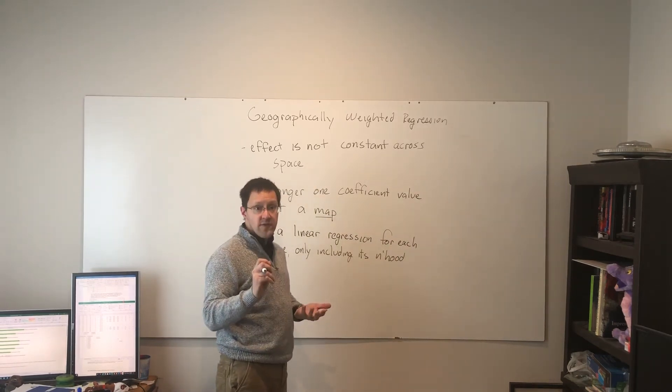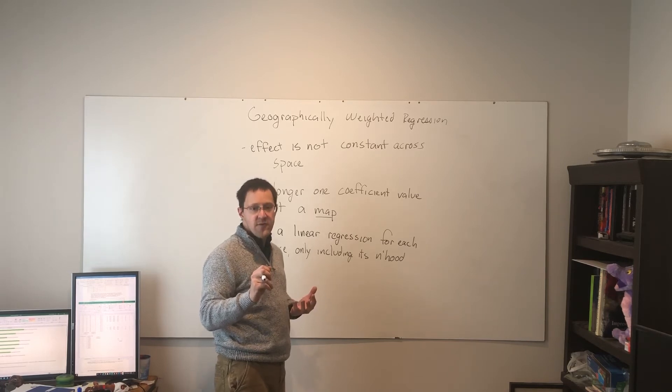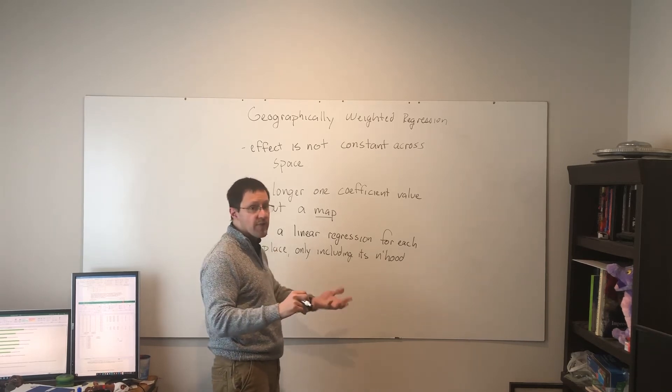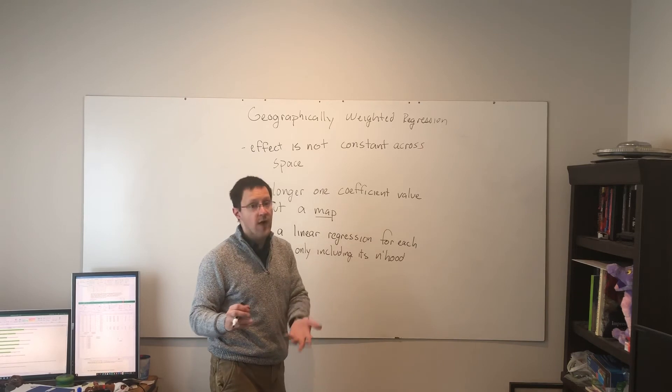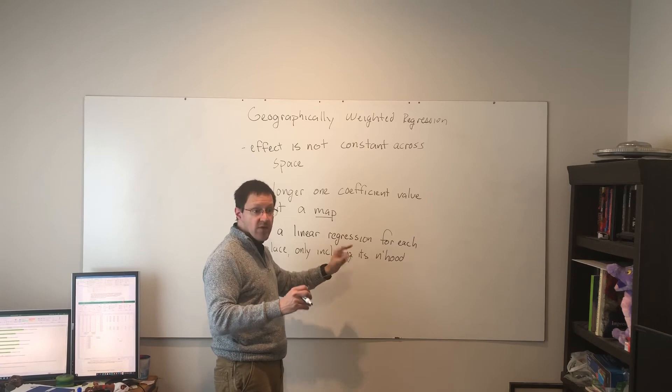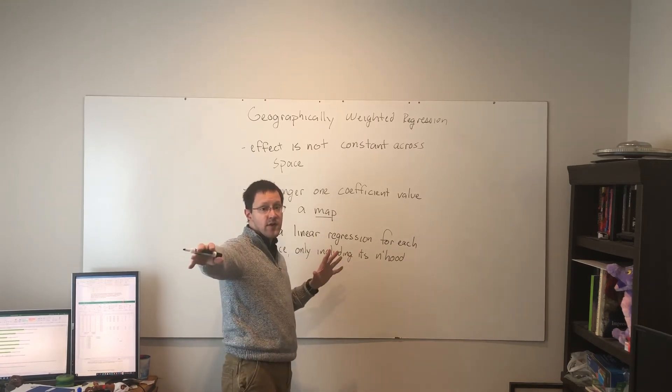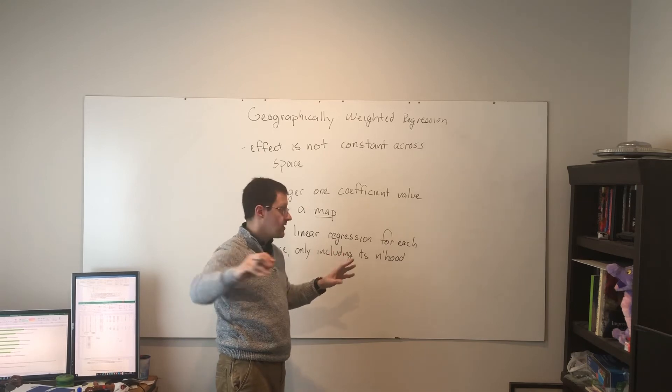So, as with spatial lag and spatial error, you probably suspected that spatial weights matrix or how we're defining a place's neighborhood is going to show up somehow or other. We're running a linear regression, but now instead of a regression for the entire study area, the entire state of West Virginia.